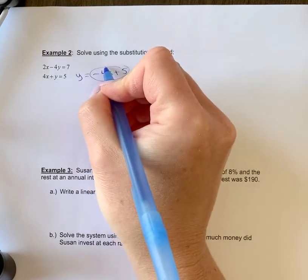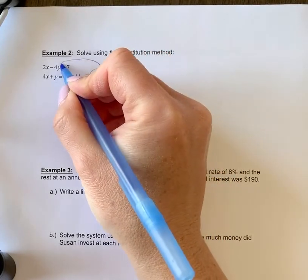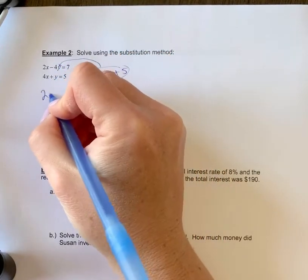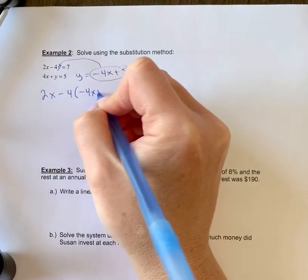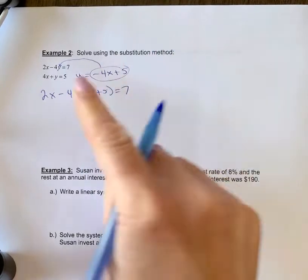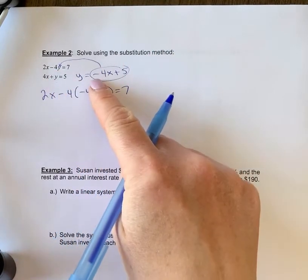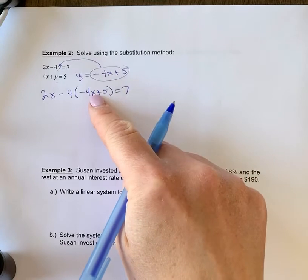That means I'm going to substitute this in for y in the second equation. So we're going to have 2x minus 4 times negative 4x plus 5 equals 7. Instead of writing a y on this equation, since y equals this, we're plugging that in instead.